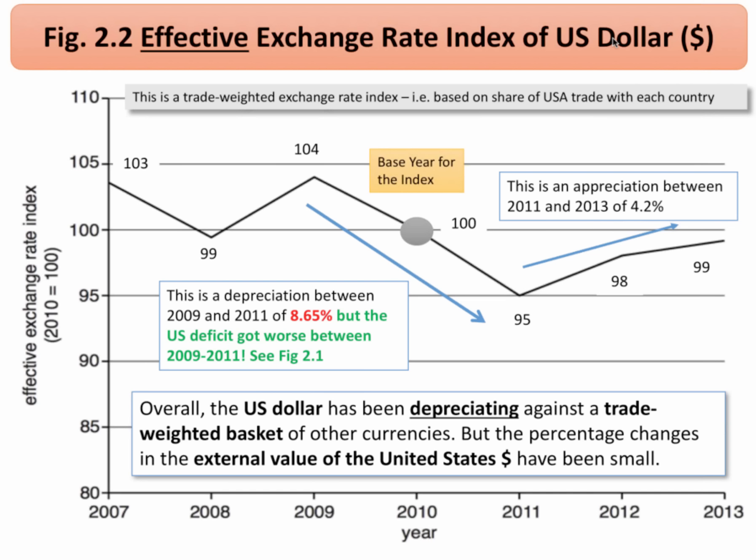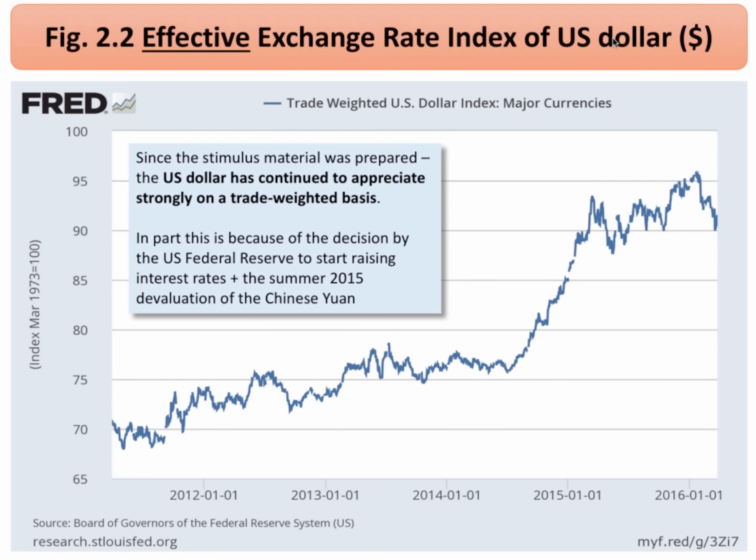Actually, going back to figure 2.1, we find that the US current account deficit actually got worse over this period when the dollar was falling. So a fall in the US dollar coincided with a worsening of the current account balance — strongly hinting at a J-curve effect, which we'll come back to. Then for the final two years of figure 2.2, the dollar starts to appreciate once again, going from 95 to 98 to 99 on a trade-weighted basis — an appreciation of about 4%. So there's been some volatility in the dollar but it's been reasonably stable overall, depreciating but not by a huge amount.